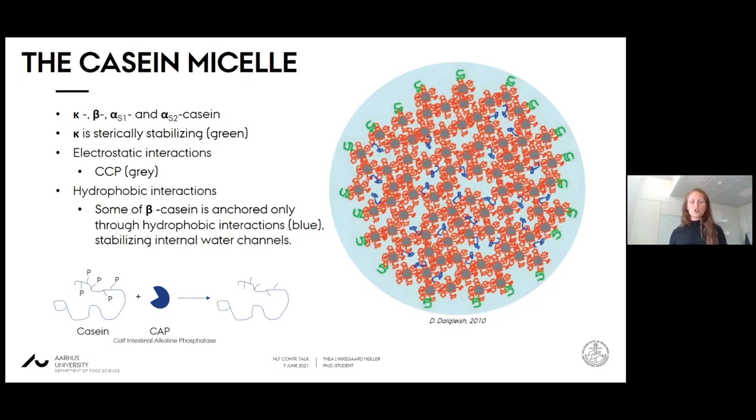The electrostatic interactions are due in part to the phosphorylations of the caseins. They bind calcium, forming calcium phosphate nanoclusters. The hydrophobic interactions happen because the caseins are rather hydrophobic molecules. Part of the beta casein, shown in blue, is thought to be anchored only through hydrophobic bonds, stabilizing presumed water channels within the casein micelle.